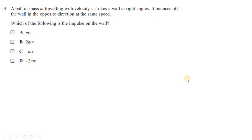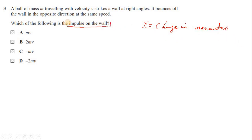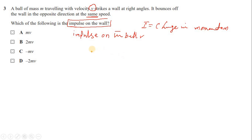Question 3: a ball of mass m travelling with velocity V strikes a wall at right angles and bounces off in the opposite direction at the same speed. Which of the following is the impulse on the wall? Impulse equals change in momentum. We find impulse on the ball first, since we know the ball's velocities, then impulse on the wall is equal and opposite.